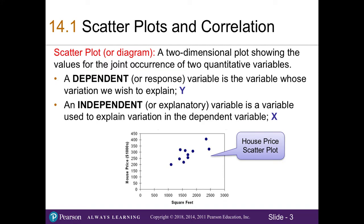A scatter plot is a two-dimensional plot showing the values for the joint occurrence of two quantitative variables. We can graph these variables to see if there is a relationship. We have a dependent or response variable that we wish to explain, denoted by the letter Y, and an independent variable used to explain the variation in our dependent variable, denoted by X.